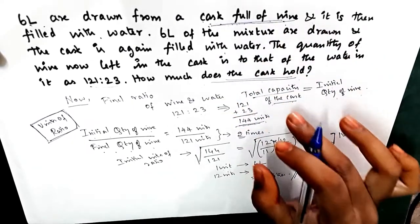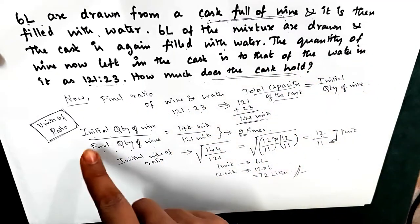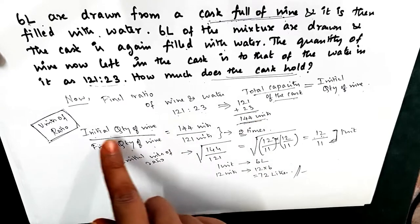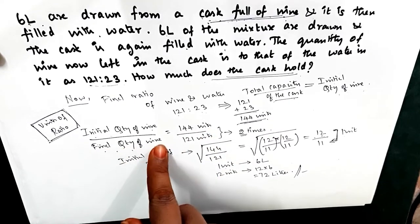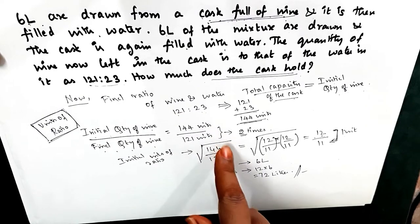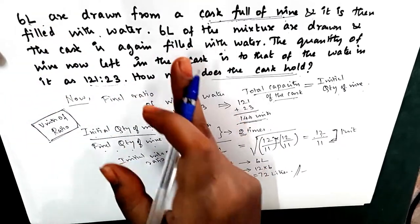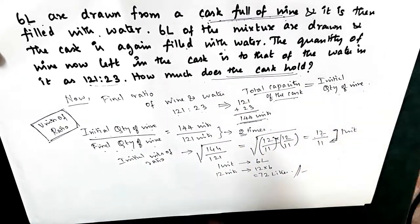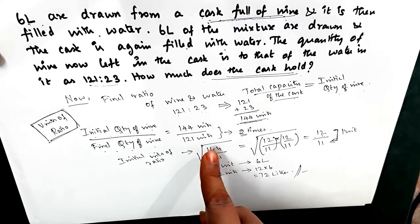We take the ratio of initial quantity of wine to final quantity of wine in terms of units. The initial quantity of wine, same as the total capacity, is 144 units and the final quantity of wine is 121 units as given. The 6 liters were drawn and filled with water, repeated two times. To reverse the process: since it was done two times, if you want to double you square it, so to reverse we take the square root.